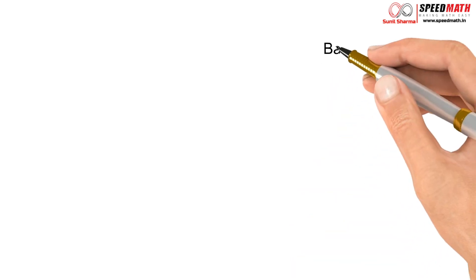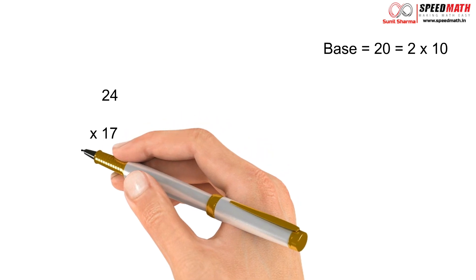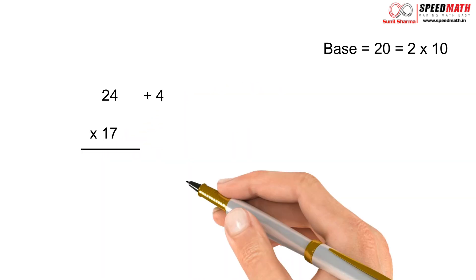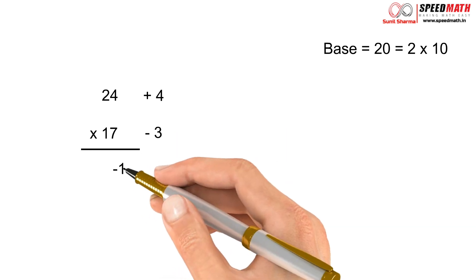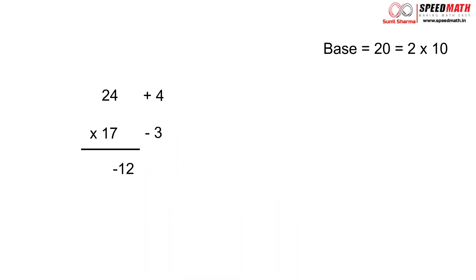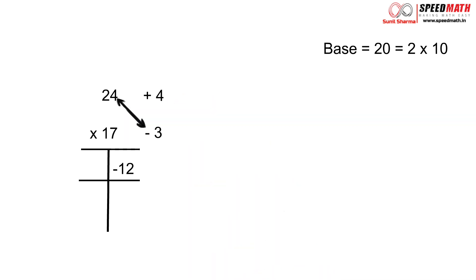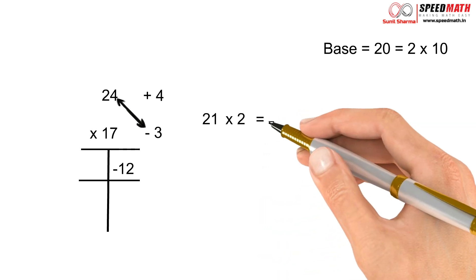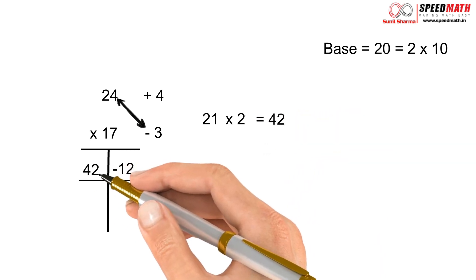Let's take one more example with base 20 — factor is 2. Multiply 24 and 17: 24 is 4 more than 20 and 17 is 3 less than 20. So 4 × −3 = −12; we'll handle the negative sign later. Diagonally, 24 − 3 = 21. Multiply by factor 2: 21 × 2 = 42.